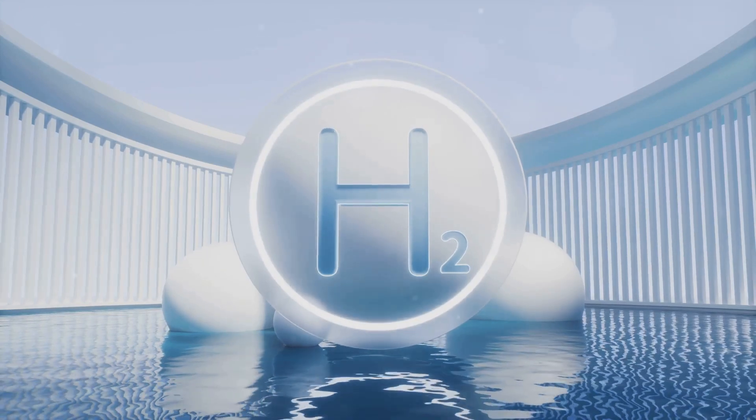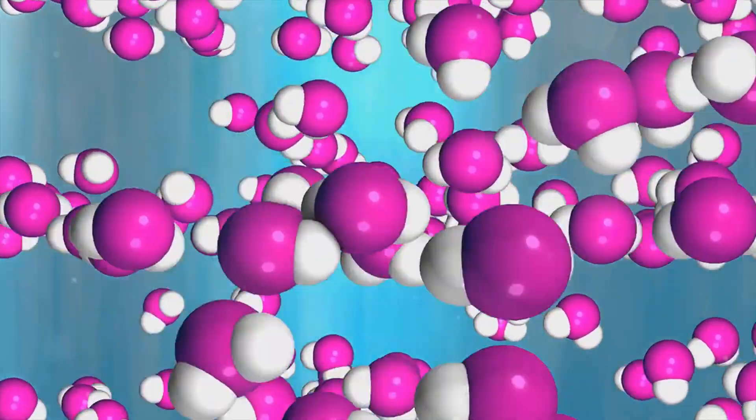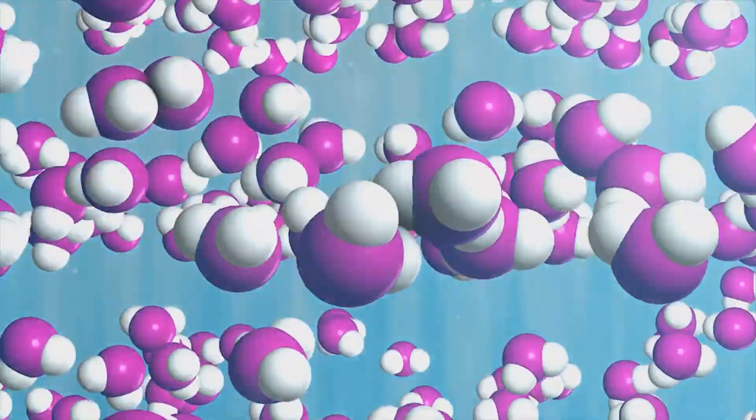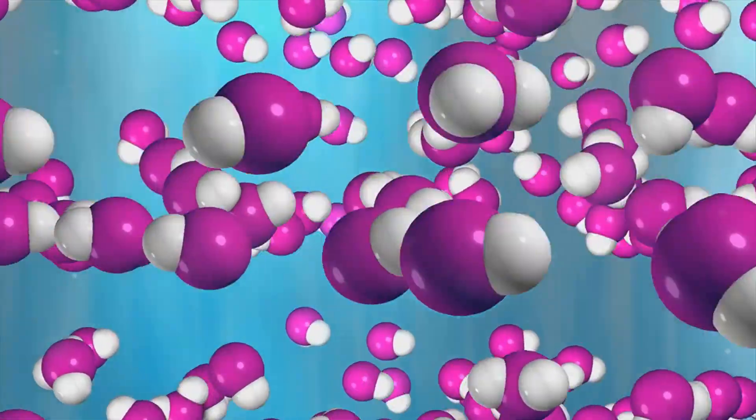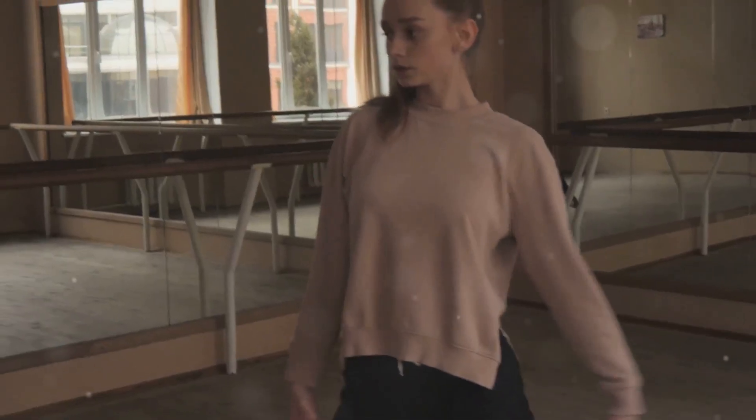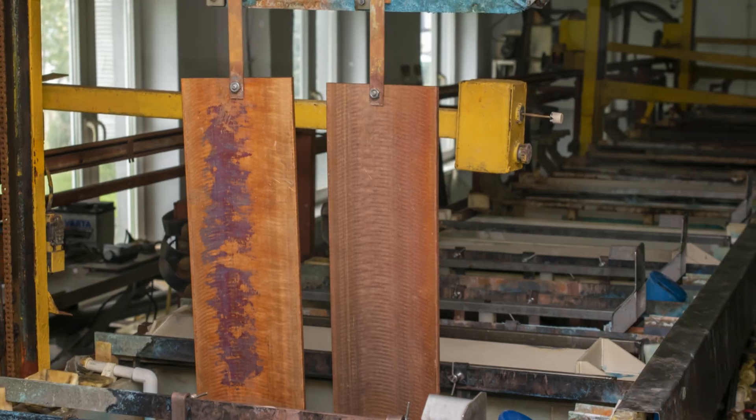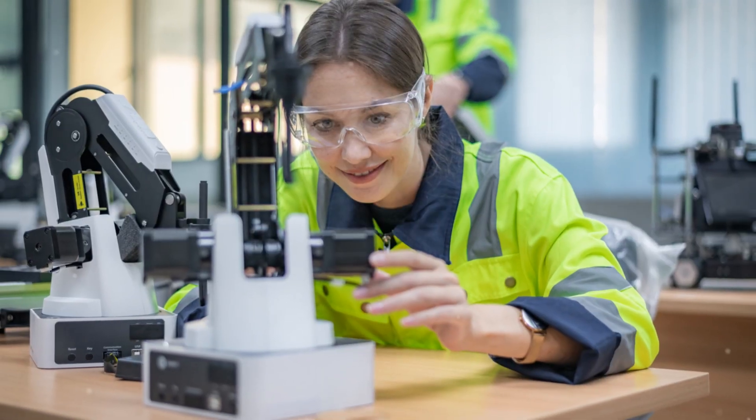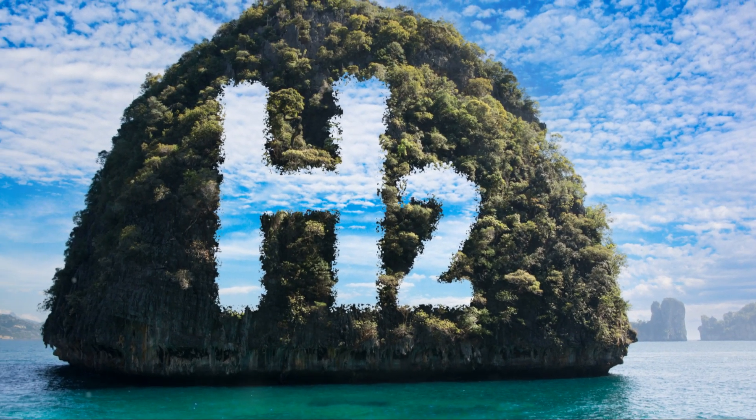The species transport model tracks the movement and concentration of different species involved: water, hydrogen ions, oxygen, hydrogen gas and oxygen gas. It's like a choreographer, ensuring these molecular dancers are in the right place at the right time, influencing reaction rates and overall efficiency. Together, these models work in harmony, providing a comprehensive picture of the PEM electrolysis process.